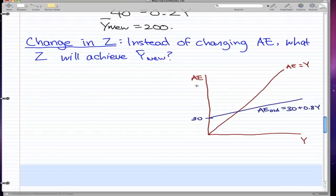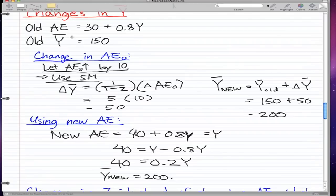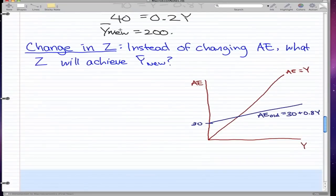So I already drew this graph for us, and what it shows is the AE versus Y graph, and this is our AE equals Y equilibrium line, and this is what we have from our old AE old. And when we increased AE to 40, our line could have been something like this, where AE new is equal to 40 plus 0.8Y.